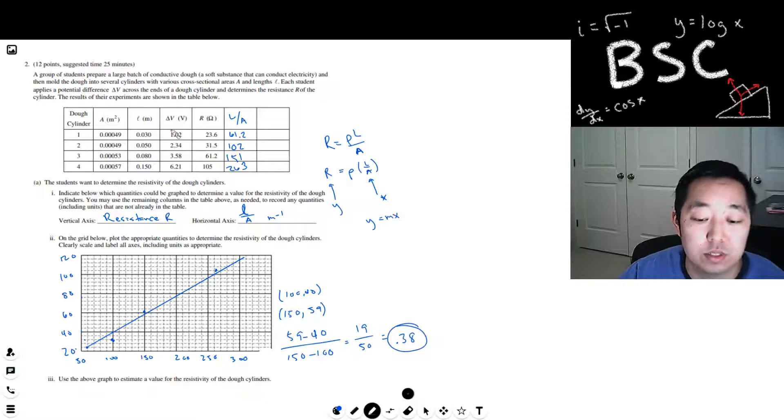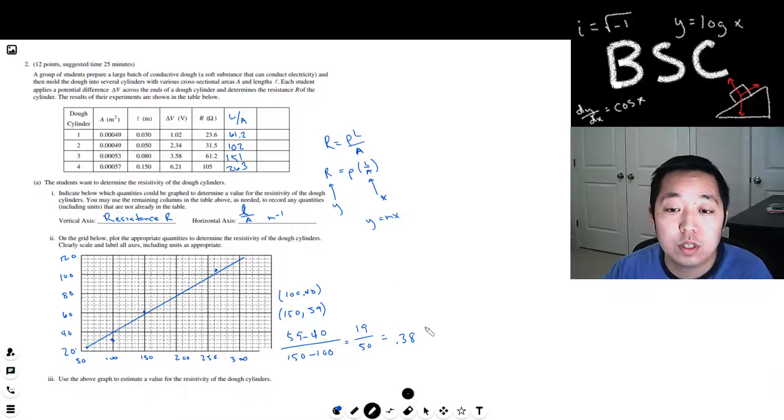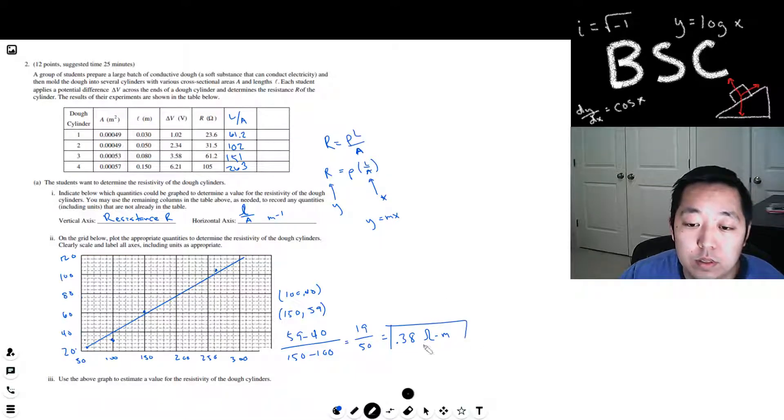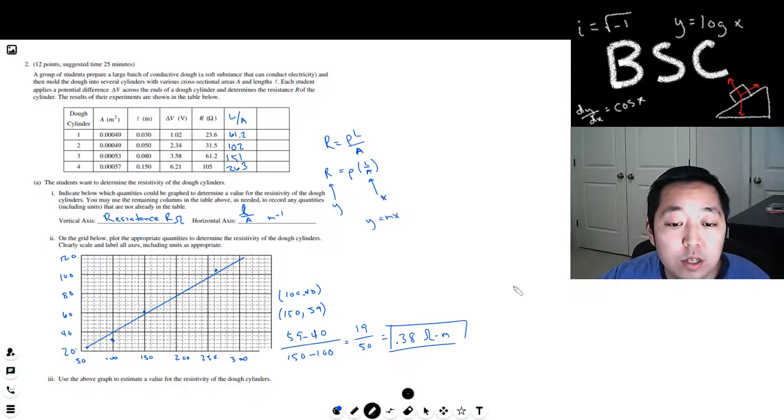Oh, units. Be careful on units. What are the units of resistivity? Let's see, it's ohms, let's see, ohms meters, ohm meters, ohm meters. And I think that's right. R ohms over meter inverse is ohm meters. Yeah, that's right. Okay.